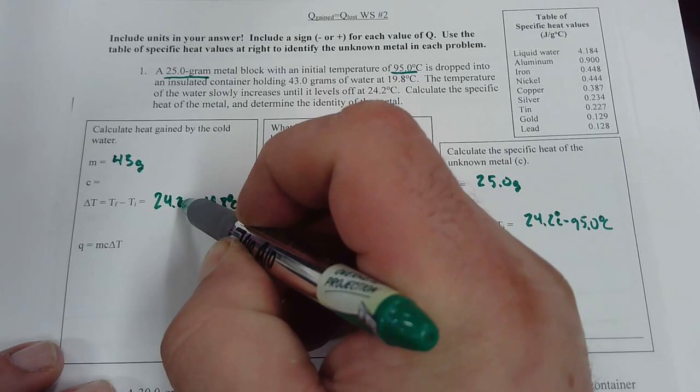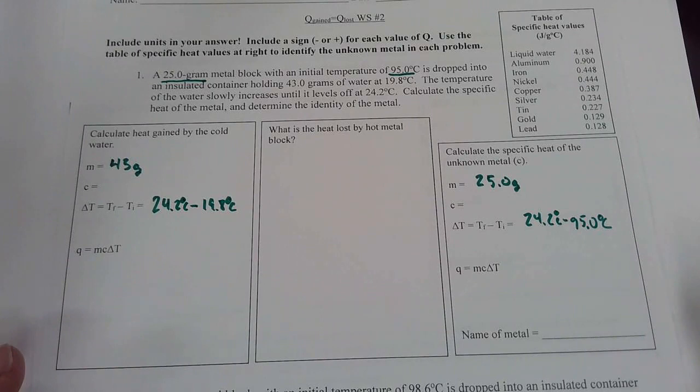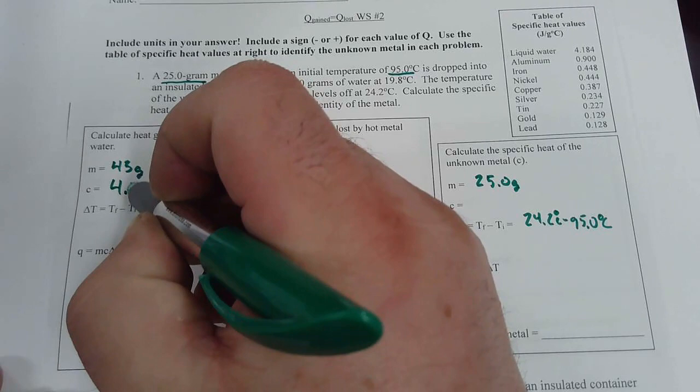Okay, so we know how to find our delta T here. We also know that water, liquid water, is 4.18 joules per gram degrees Celsius.